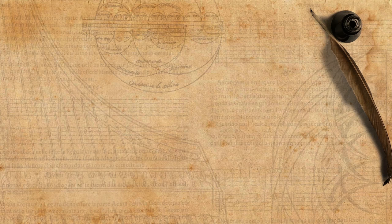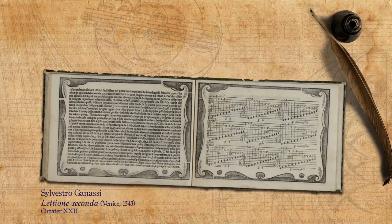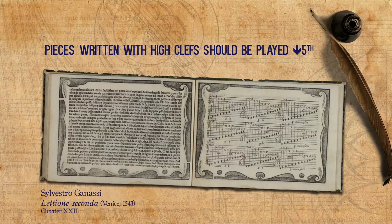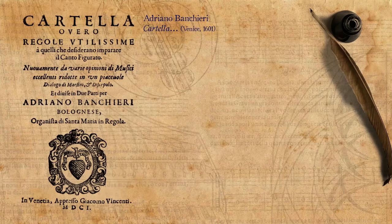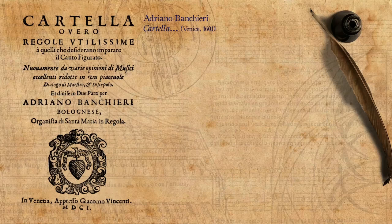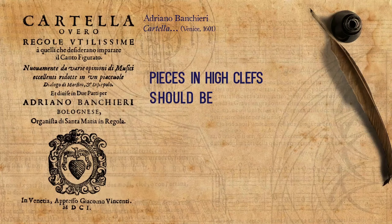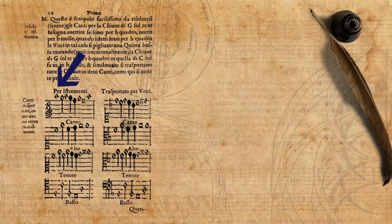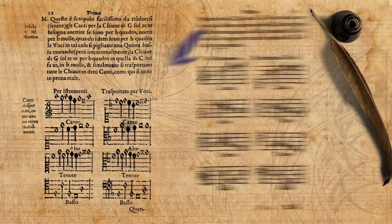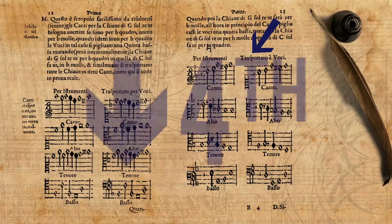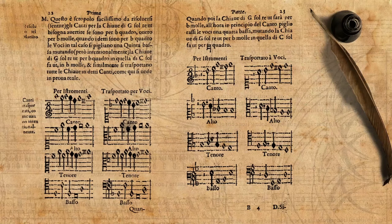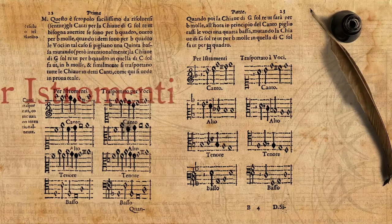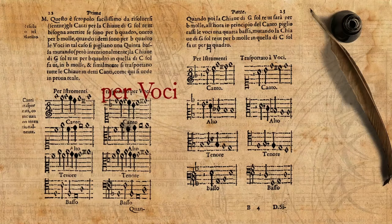Probably the first theoretician to address the subject is Silvestro Ganassi. He writes that pieces written with high clefs should be played transposed down by a fifth. Half a century later, we get a more refined version of the rule by Adriano Banchieri. He writes that pieces in high clefs should be transposed according to whether they have a flat or not: if they do not have a flat, they should be transposed a fifth downwards and a flat added; if they have a flat, they should be transposed a fourth downwards and lose their flat. Banchieri also labels high clefs as meant per instrumenti — for instruments — as opposed to the standard clefs which are meant per voci, for voices.